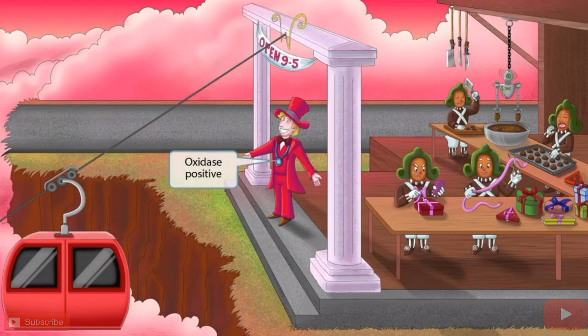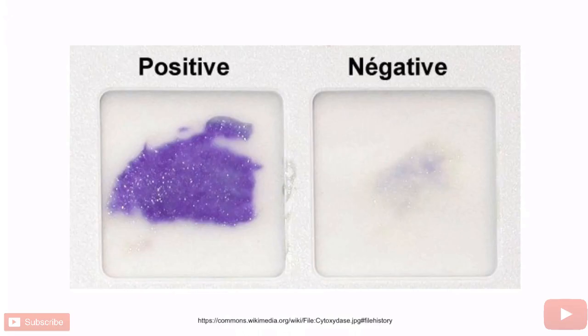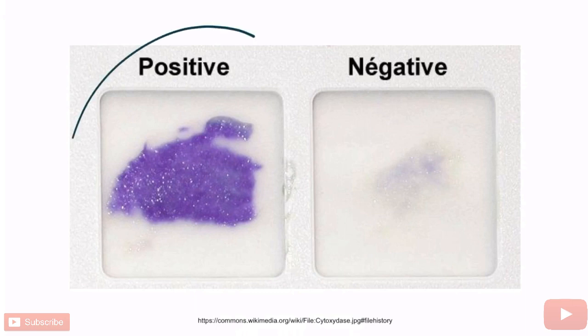This is an image of the oxidase test, used to determine if a bacterium produces the enzyme oxidase. In this test, a disc is coated with a compound known as TMPD. When TMPD is oxidized, it becomes blue or purple; if it's not oxidized, it remains relatively colorless. So if bacteria that produce oxidase are added to the disc, TMPD will become oxidized and turn blue or purple. The disc on the left is purple, indicating a positive test.